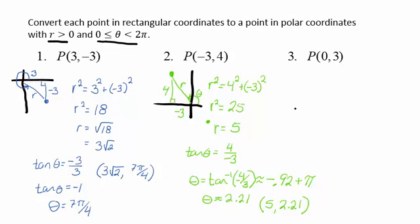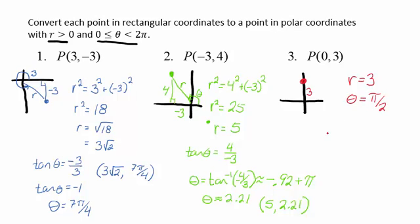Let's look at the last example here. The point 0, 3. Now the point 0, 3 would live 3 units up on the y-axis, and so its distance away from the origin would be 3. So our radius is 3. The angle theta, because it's on the y-axis, would have to be pi over 2. And so our point 0, 3 in the polar coordinate system would be represented as 3, pi over 2.